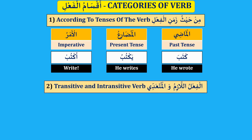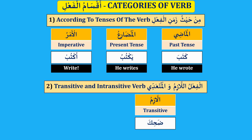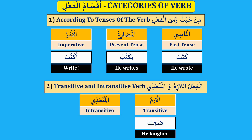Second category: al-Fi'l al-Lazim wa al-Muta'adi, transitive and intransitive verb. Al-Lazim, intransitive — dahika, he laughed. This kind of verb doesn't need any object, any maf'ool bih. Al-Muta'adi, transitive — qara'a, he read. This verb needs an object, like reading a newspaper, reading a book, reading Quran, etc.